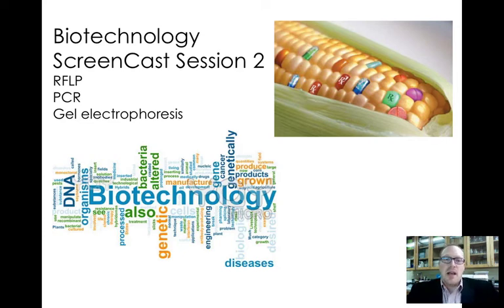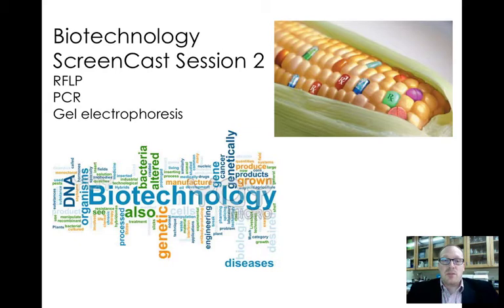This screencast session is going to highlight what we call RFLP, or Restriction Fragment Length Polymorphism Analysis, more commonly known as your DNA fingerprint. There are two other techniques I'm going to talk about today that you need in order to do a DNA fingerprint: PCR, which is polymerase chain reaction, and gel electrophoresis. So we're going to discuss those three techniques today.